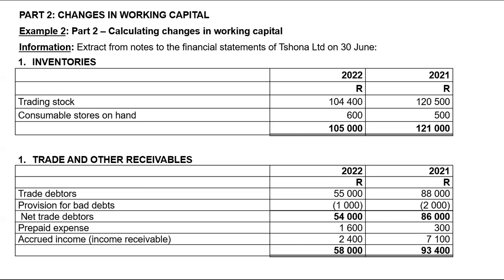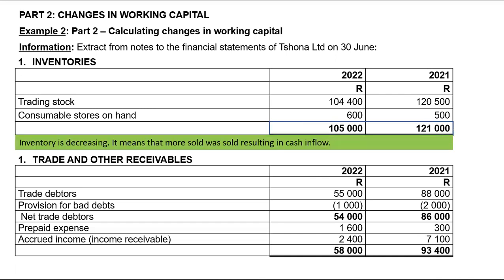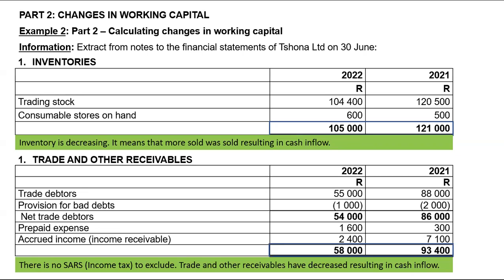Because it has decreased, it means that the people who were owing you are now paying you back. I realized that when I compared those two elements, there's no SARS income tax to exclude. Therefore we can conclude that trade and other receivables have decreased, resulting in a cash inflow.